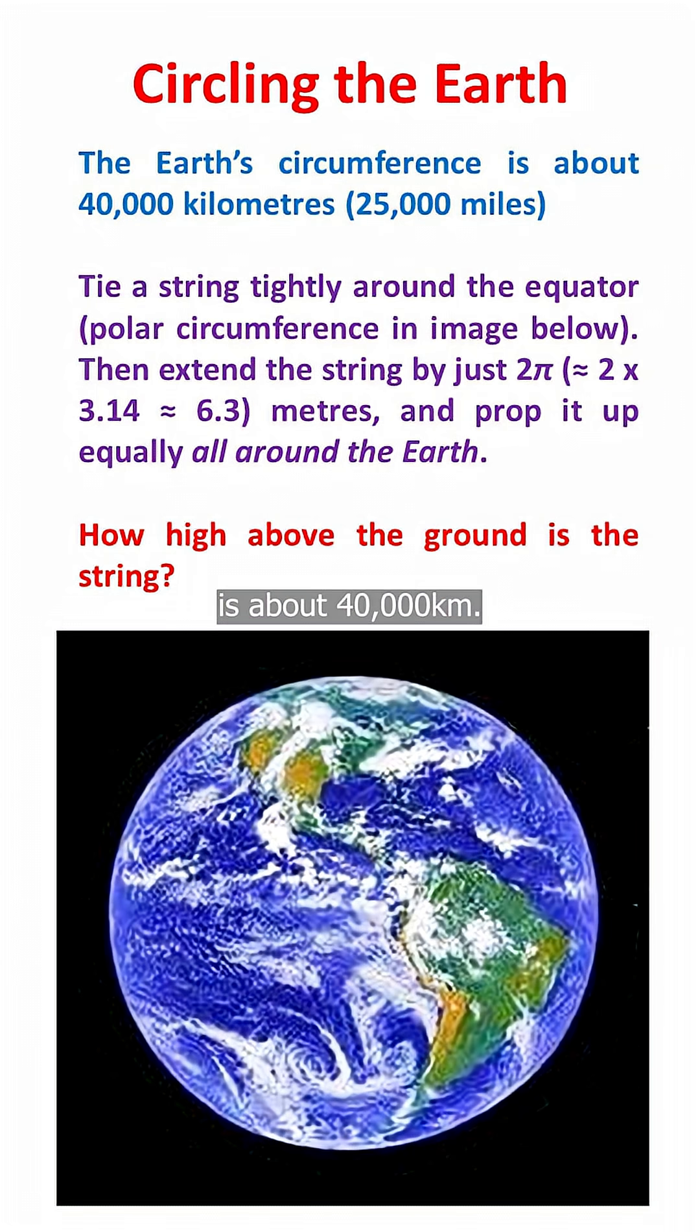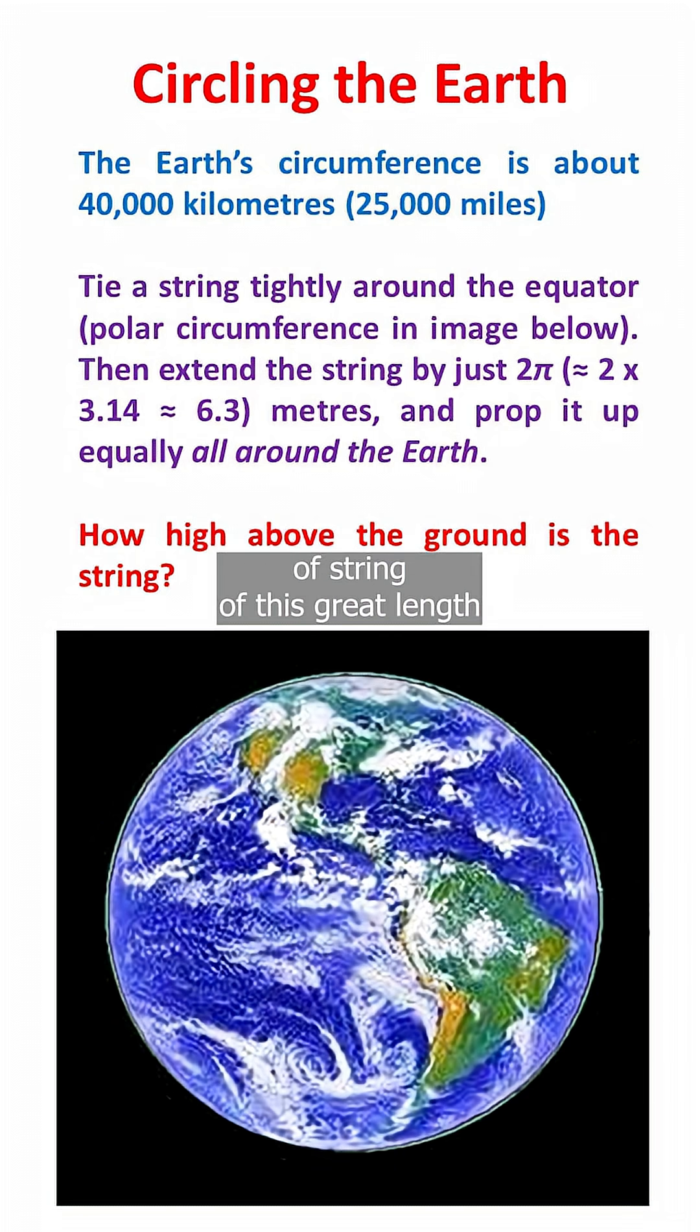The circumference of the Earth is about 40,000 kilometres. Assuming the Earth to be a perfect sphere, suppose we now tie a piece of string of this great length tightly around the equator.